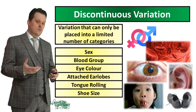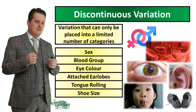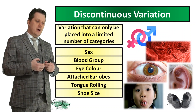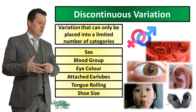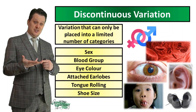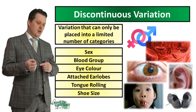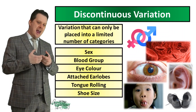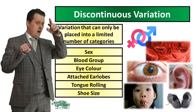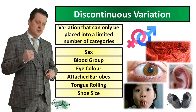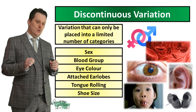Shoe size does give a numerical value, but remember our definition for continuous data — it has to be able to take any value within a range. When we buy shoes we have whole sizes — 6, 7, 8 — and half sizes like 6.5 or 7.5. Very rarely do you see a quarter size, and you can't have one-sixth or one-eighth of a size, so you cannot have any value within the range. Therefore, although plotting shoe size gives a curve resembling a distribution curve, it is not considered continuous data.